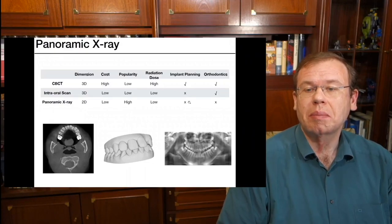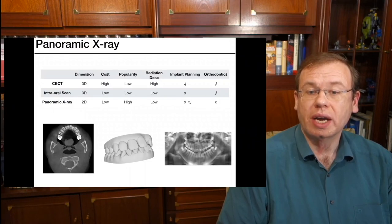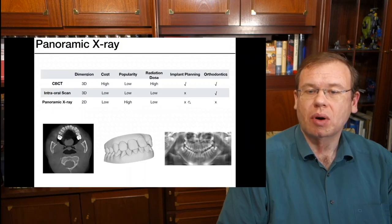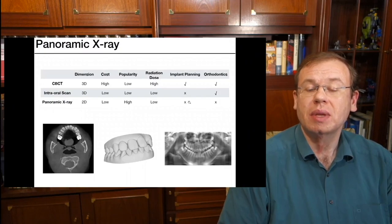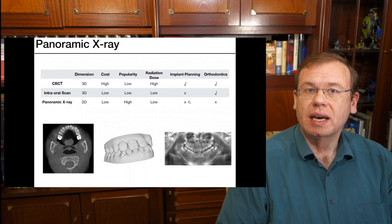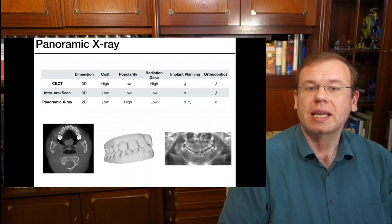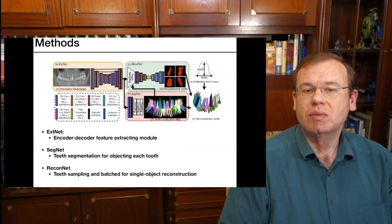The cost is unfortunately a bit high. Popularity is not so high because the devices are rather costly and they also are associated with high radiation dose. But you could do implant planning and orthodontics with it. Now, what is much more common are panoramic x-rays that you can see here on the bottom right. They are in 2D, are low cost, very popular and have a low radiation dose. Unfortunately, you can't do implant planning with them.